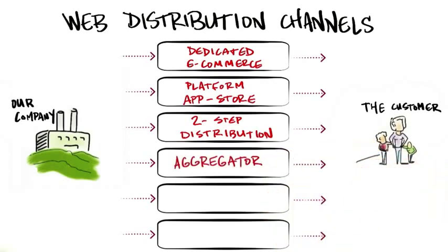You might use an aggregator. An aggregator is somebody who takes a vertical market approach — insurance, shoes, et cetera. Some examples are LendingTree for insurance, or Zappos.